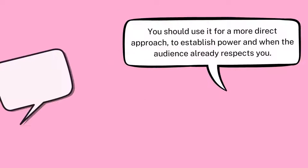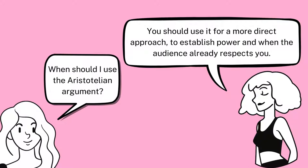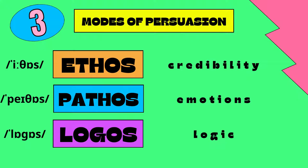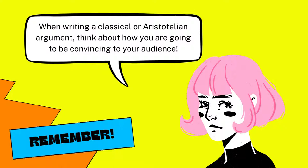When should I use the Aristotelian argument? You should use it for a more direct approach to establish power and when the audience already respects you. The three modes of persuasion according to Aristotle are ethos, which stands for credibility; pathos, which stands for emotions; and logos, which stands for logic. The most important thing to remember when writing a classical Aristotelian argument is to think about how you're going to be convincing to your audience.